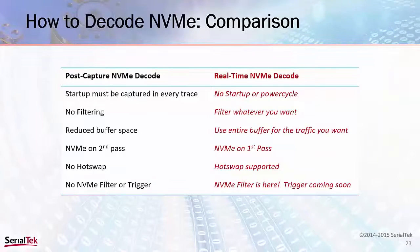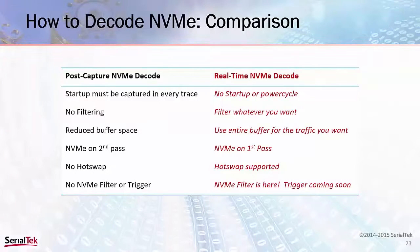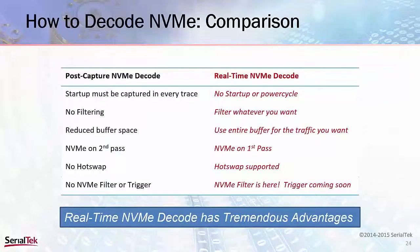Here is a summary of the comparison between post-capture NVMe decoding using software and real-time NVMe decoding using hardware. It's no contest. Only real-time NVMe decoding allows you to capture a trace without being forced to capture startup. Real-time NVMe decoding allows you to filter whatever you want and capture only the traffic that's relevant to you. There's no need to wait for a second pass for software to construct the NVMe. Hot swapping is supported. And finally, native NVMe filtering is supported and currently available, with native NVMe triggering coming soon. Serial Tech has a serious and substantial advantage in NVMe decoding using real-time hardware archiving.